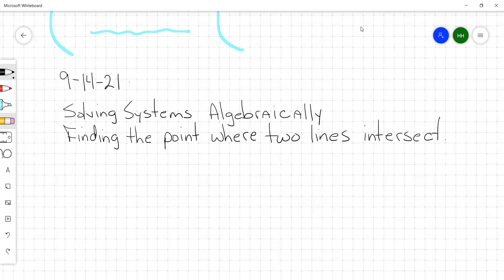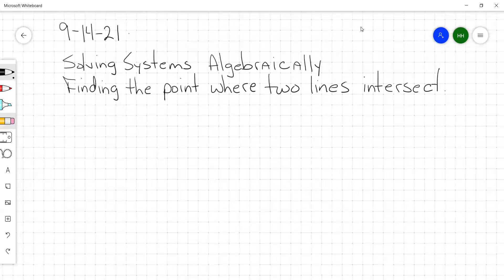We're going to find the point where two lines intersect and we're going to do it algebraically or mathematically. There's a couple of different techniques that you can use and today we are going to solve by substitution.